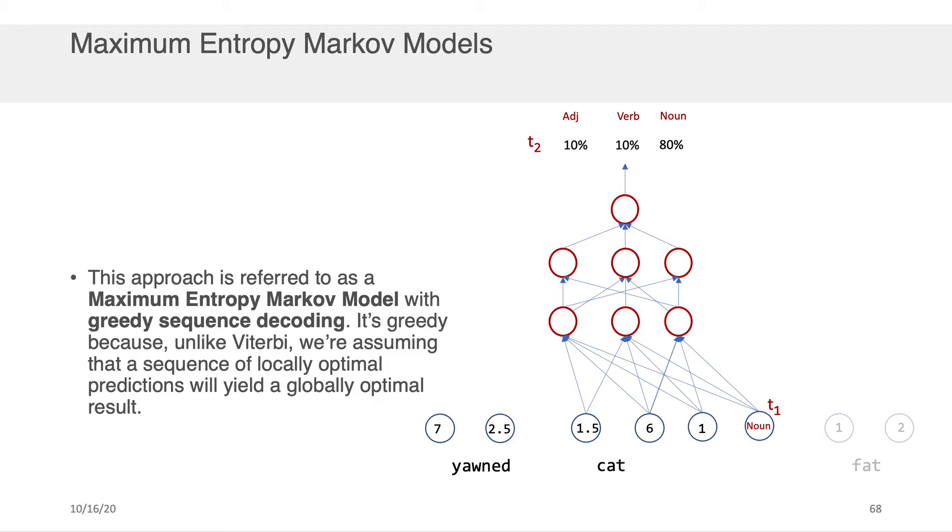This approach is referred to as maximum entropy Markov modeling. And my choice to take the best or most probable version of the previous class label and feed it in when predicting the next class label is called greedy sequence decoding.